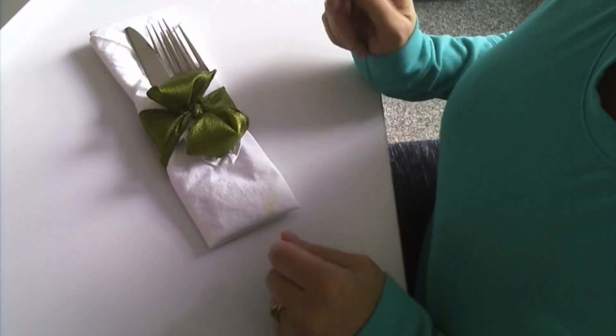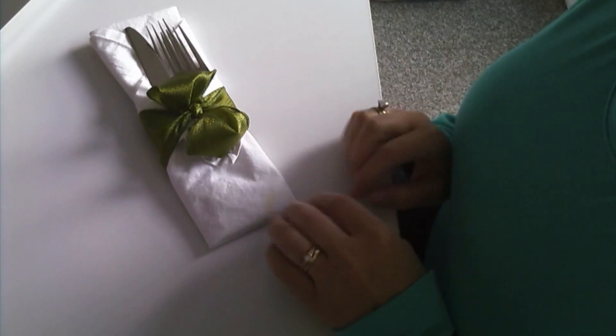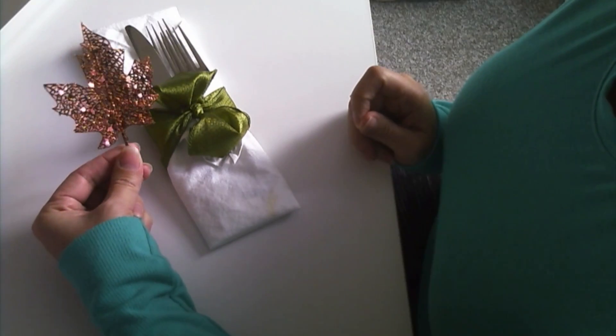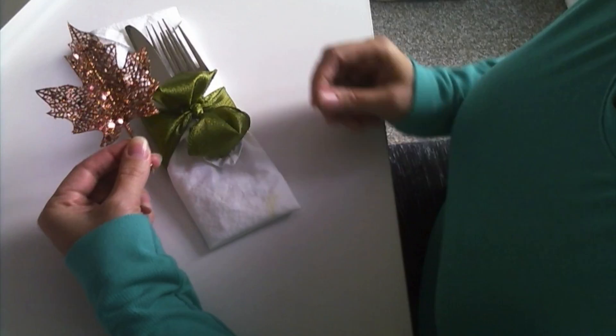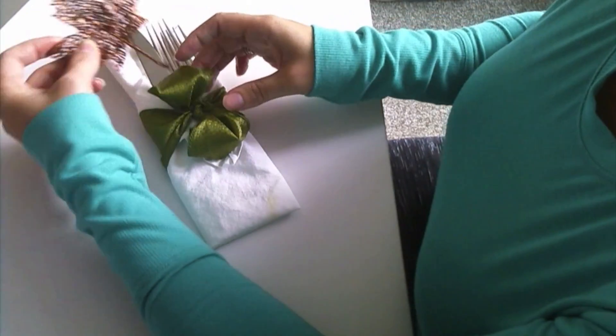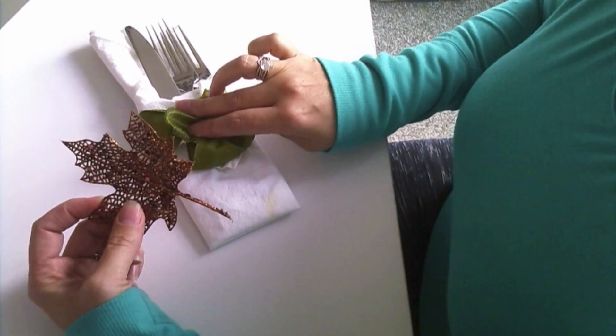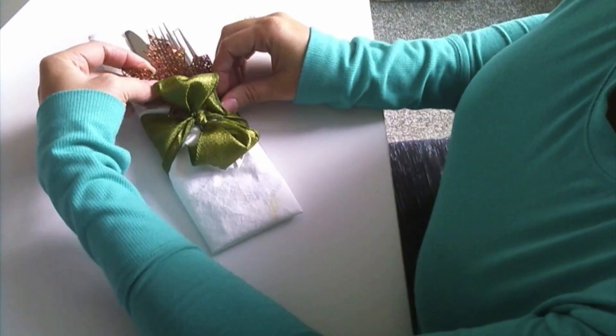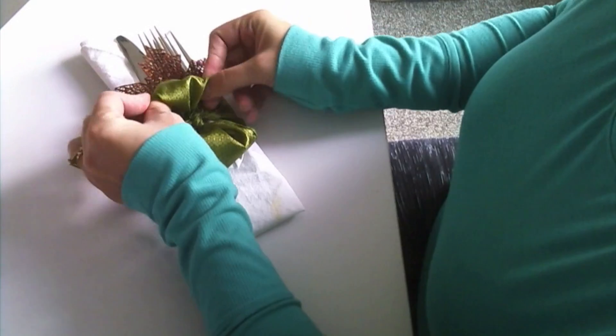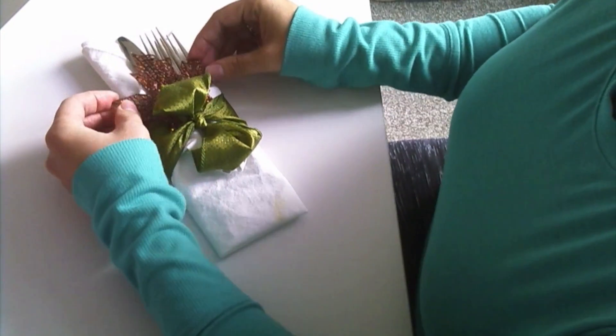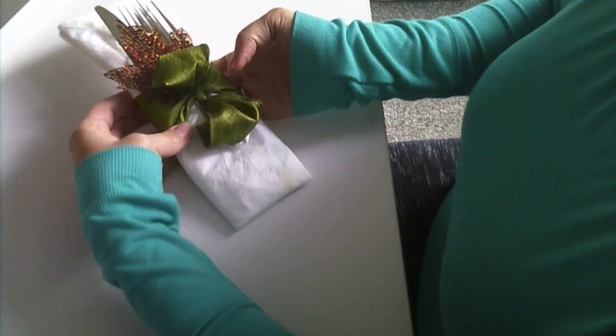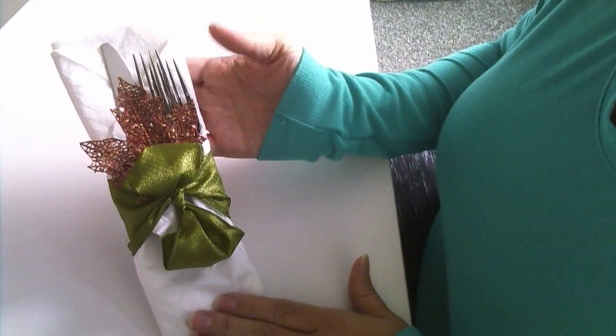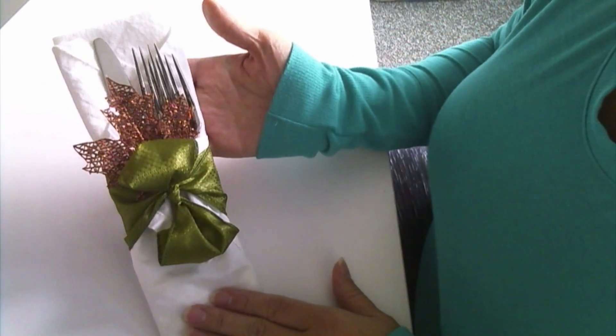Then all I did was take this copper color leaf and I'm going to stick that right down underneath the bow, in between the bow and the napkin. I'm just going to stick that down just like that so that it sticks out of the top. And there you have it guys, there is your little silverware napkin place setting.